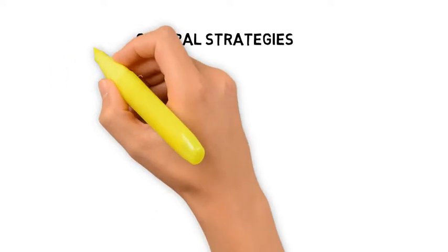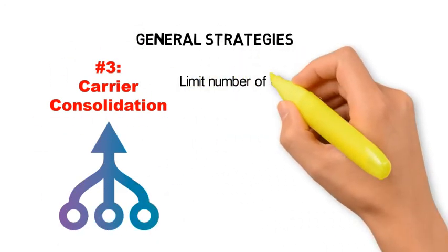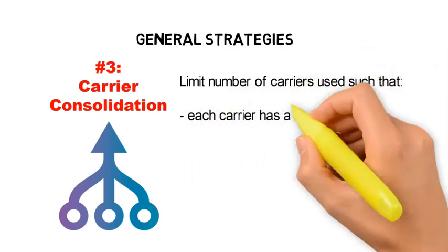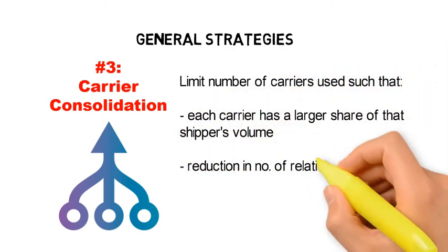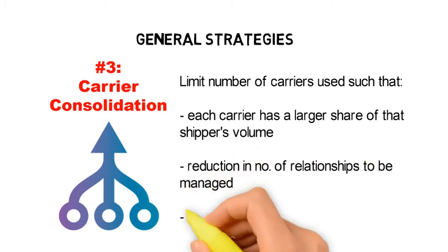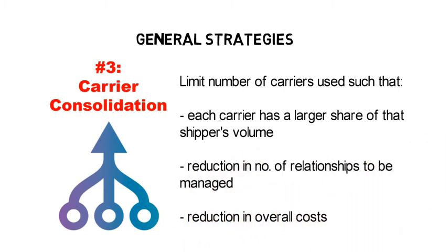The third general strategy is carrier consolidation. When a shipper limits the number of carriers used, each carrier gets a bigger share of the business. This makes the shipper a more important customer and increases their bargaining power. The shipper also needs to manage fewer relationships, spends less time managing carriers, and overall reduces total costs.